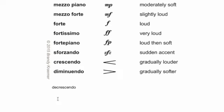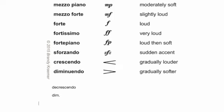The opposite is diminuendo — that is gradually getting softer. Similarly, the symbol here just means to gradually get softer. You can follow the line as it narrows over your measure of music. Diminuendo and decrescendo are used interchangeably. You can even see these terms abbreviated as well — sometimes composers don't use the symbols, so you might see 'dim.' or the decrescendo abbreviation. So these are all the ways that we can indicate gradually getting louder or gradually getting softer.